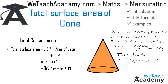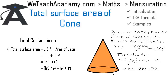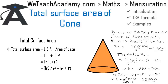Expanding: 22 × 7 = 154 and 22 × l = 22l, equated to 704. Transferring 154 to the right: 22l = 704 − 154 = 550. So l = 550 ÷ 22 = 25 cm. The slant height is 25 centimeters.